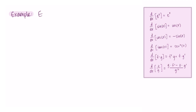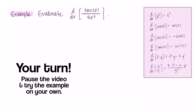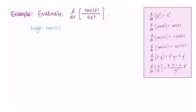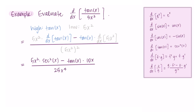Time for another example: evaluate the derivative of tangent of x divided by 5x squared. Again, that "divided by" is a good indicator we're using quotient rule. The high function is tangent and the low function is 5x squared, giving us low d-high minus high d-low over low squared. The derivative of tangent is secant squared, and the derivative of 5x squared is 10x. Distributing the squared in the denominator gives 25x to the fourth, so the derivative is (5x² · sec²x − tan x · 10x) / 25x⁴.